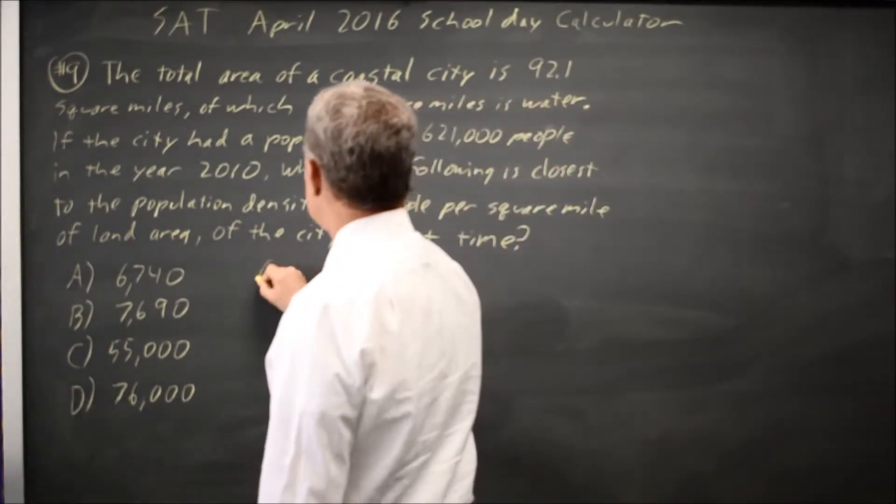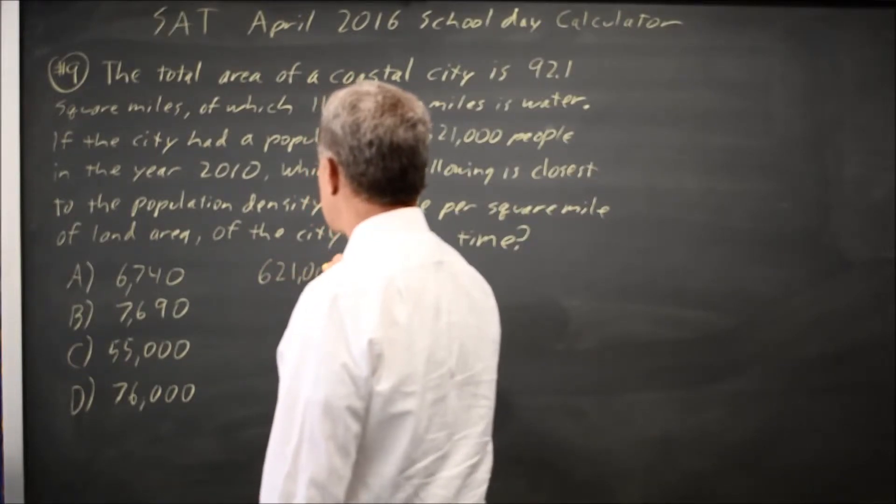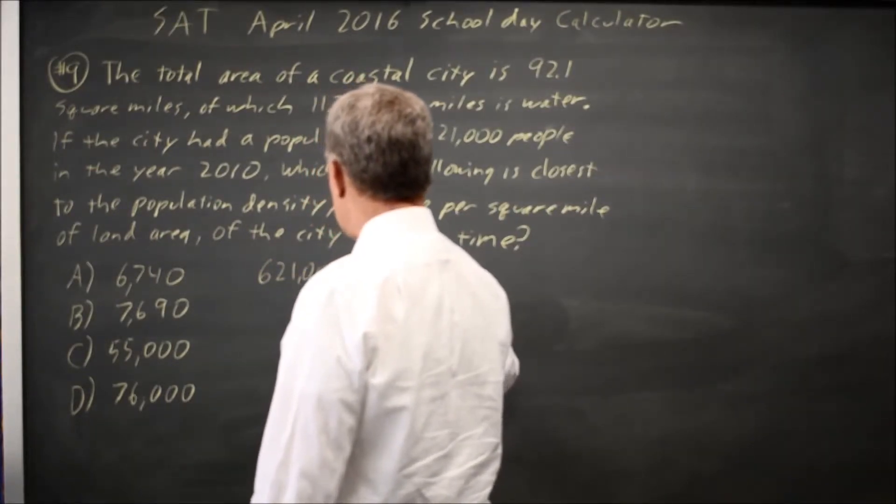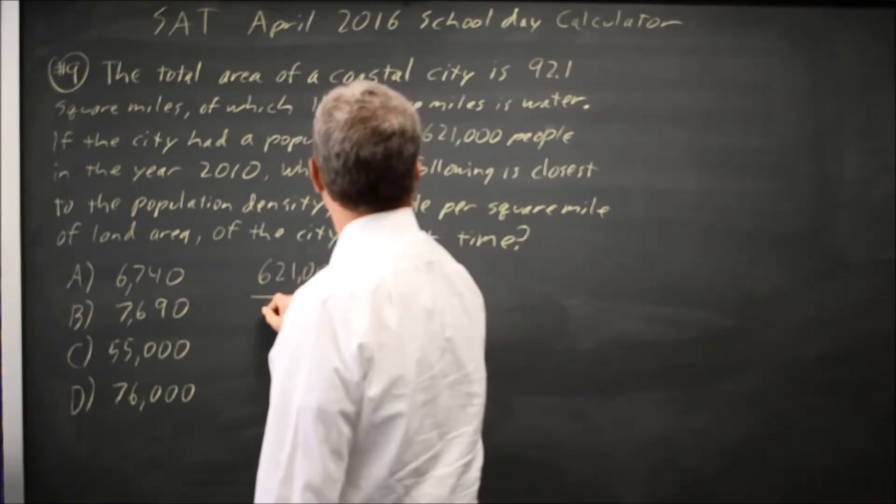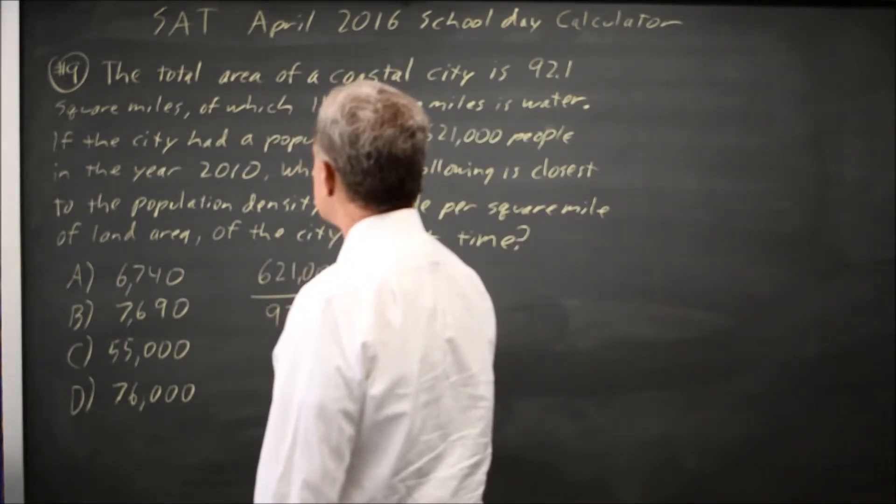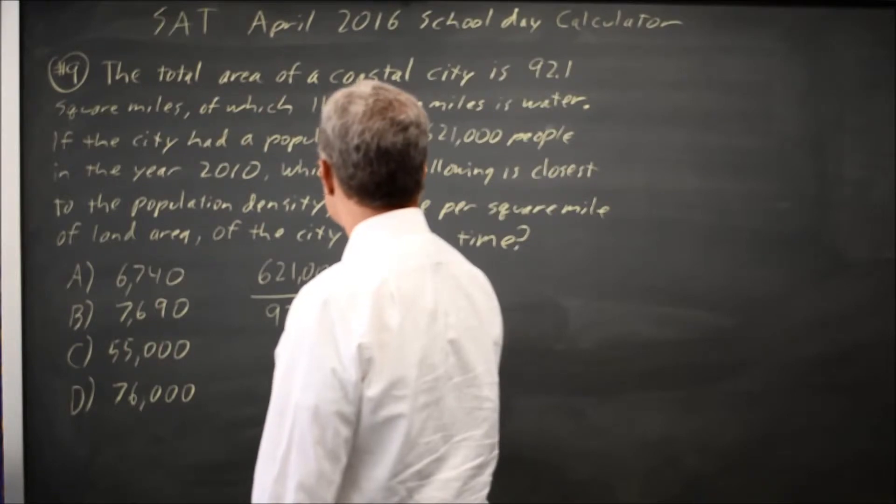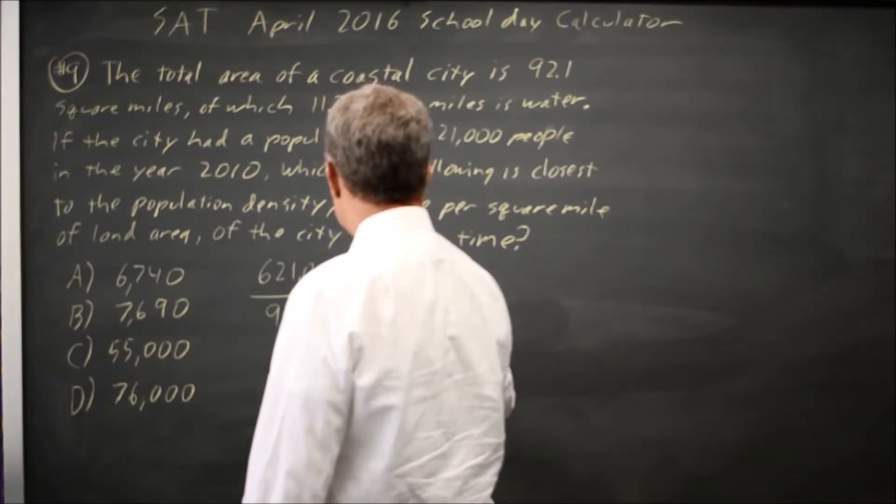So to find this, we multiply 621,000 people. We divide that by the land area, which is 92.1 square miles minus 11.3 square miles.